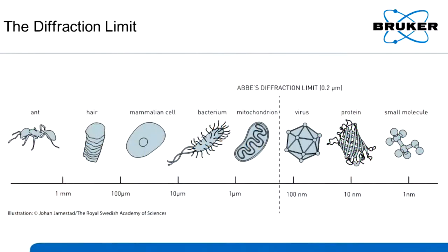So first of all, why SuperResolution? Well, as biologists, most of the things we're interested in are actually below the diffraction limit of light. So if objects are closer than 200 nanometers apart, we can't discern them using light. We need a way to beat that diffraction limit. The VUTARA uses single molecule localization to beat the diffraction limit of light.